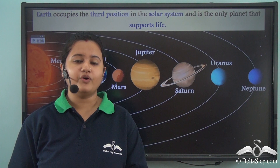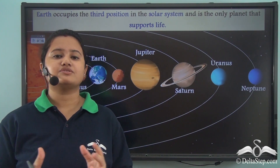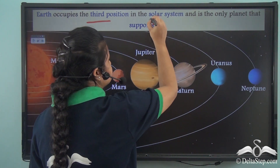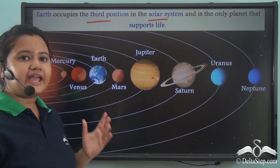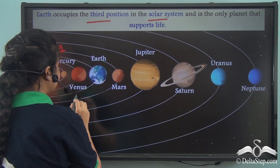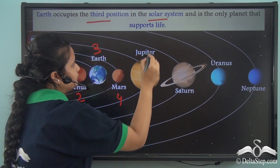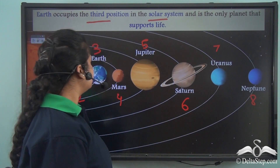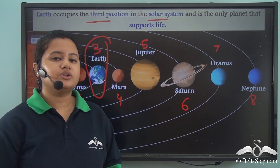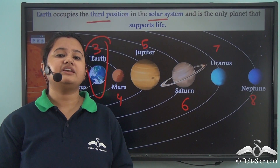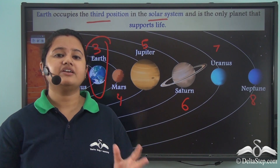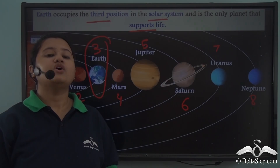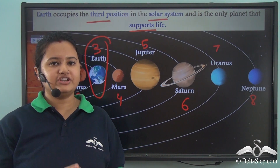Earth was formed millions of years ago and occupies the third position in our solar system. The eight planets in order are: Mercury (1), Venus (2), Earth (3), Mars (4), Jupiter (5), Saturn (6), Uranus (7), and Neptune (8). So Earth is the third planet in our solar system. This planet is very unique — it is the only planet in the entire universe that supports life. We shall now discuss the shape and unique features of the Earth.